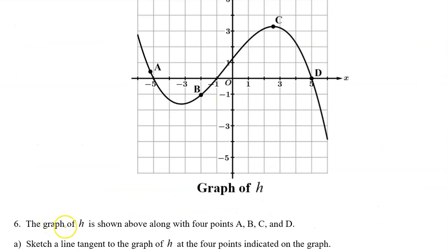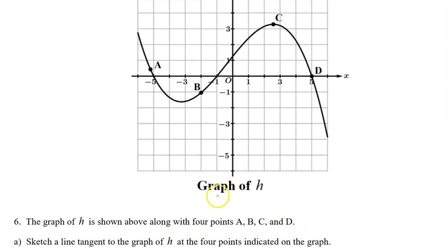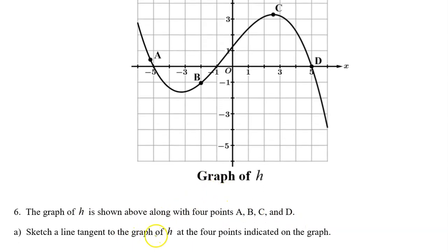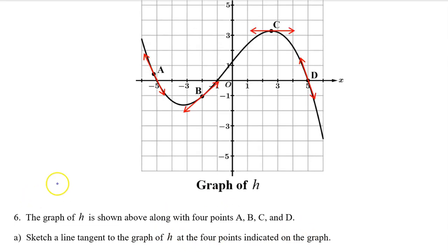Number 6: the graph of h is shown above along with four points a, b, c, and d. Sketch a line tangent to the graph of h at the four points indicated on the graph. Here's a tangent line drawn at each point.